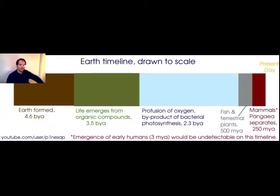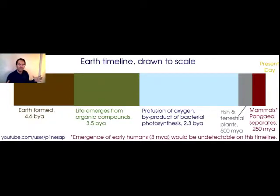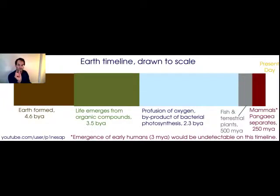Again, 500 million years ago fish and terrestrial plants came on the scene. 250 million years ago is when mammals came on the scene, and that's also when Pangaea, the singular landmass, broke apart into the continents that we know today — bringing us to the present day. Even on this Earth timeline, three million years compared to that 250-million-year time span for mammals would still be an undetectable line at the end of that red section.